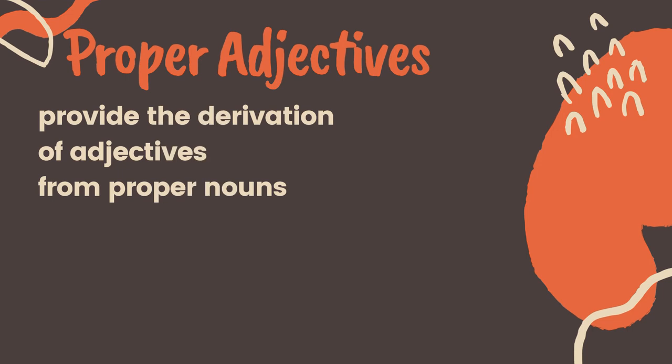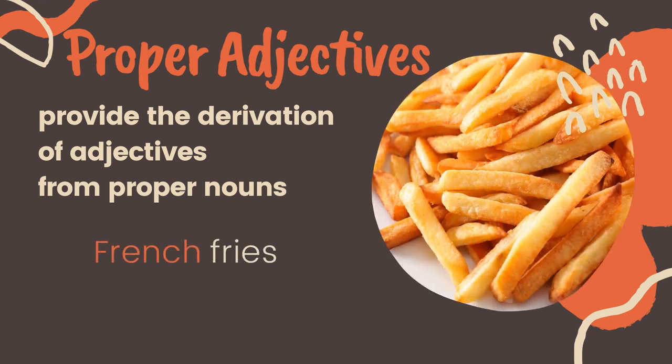Proper adjectives provide the derivation of adjectives from proper nouns. For example, 'French fries' — France is the proper noun and French is the proper adjective which describes where this type of fries originated. Another example: 'Japanese tea' — Japan is the proper noun and Japanese is the proper adjective.